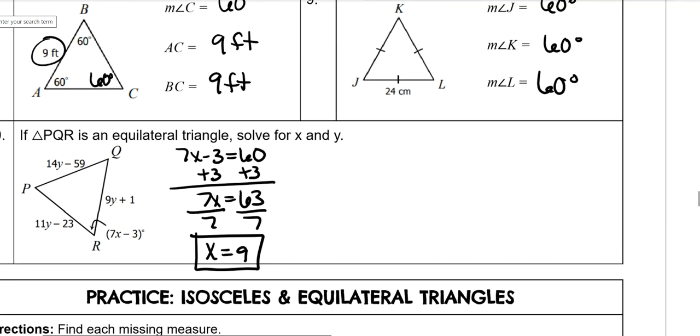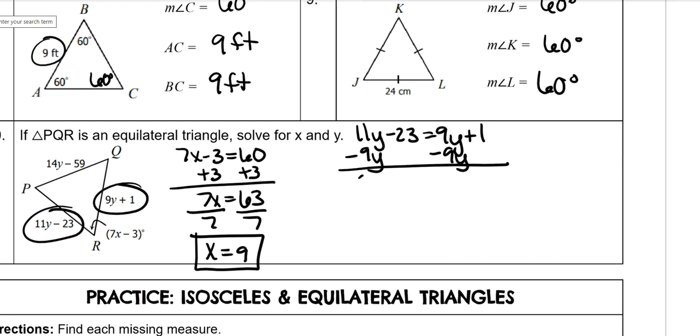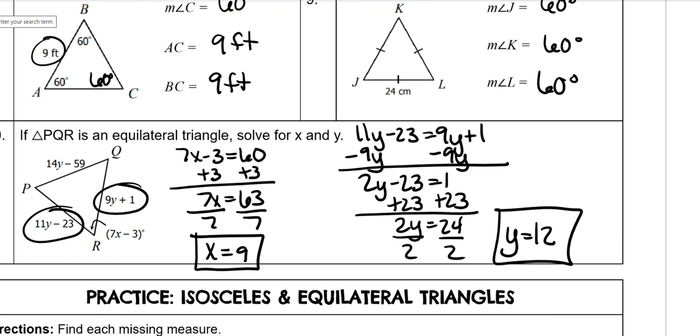And then all of the sides of an equilateral triangle are equal as well, so you just choose 2. It doesn't matter which 2. I just choose the smaller numbers and set them equal to each other and solve. Subtract 9y from both sides. Add 23 to both sides, and then divide by 2. So y is 12. And that's the end of our notes.